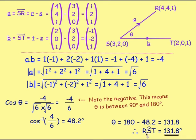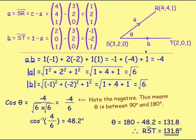Therefore angle RST is 131.8 degrees. Don't be confused by the drawings in this example — you're just doing a small sketch and you don't know the size of the angle when sketching. You're drawing two vectors and writing in the points, not drawing it accurately, so the sketch does not represent the angle to scale.